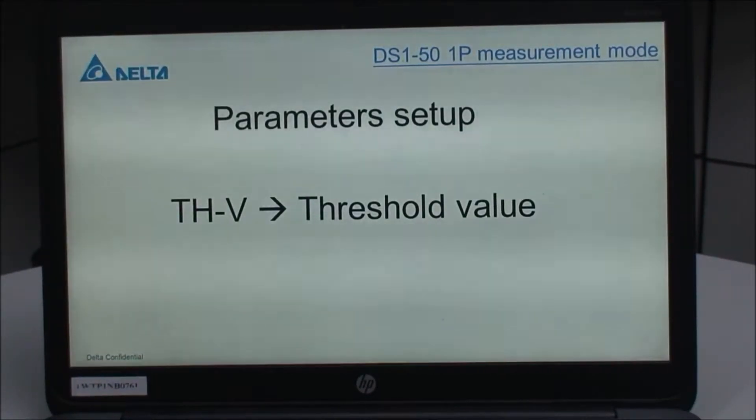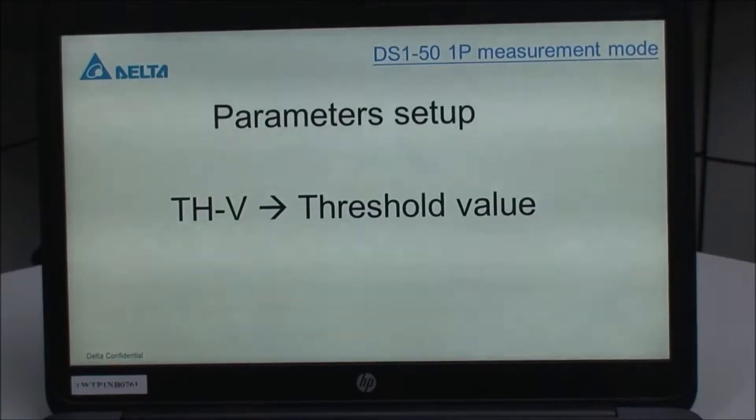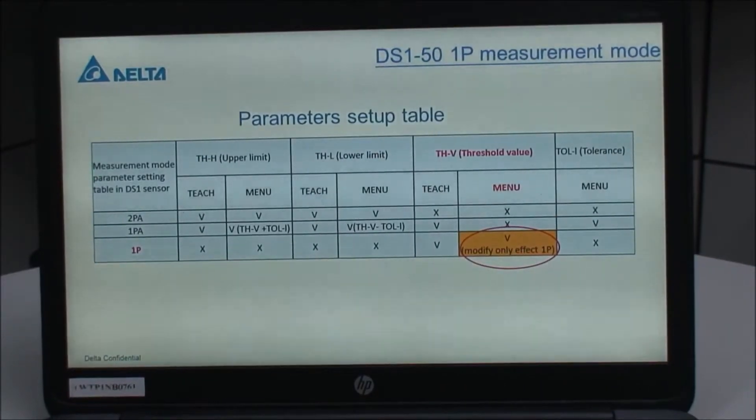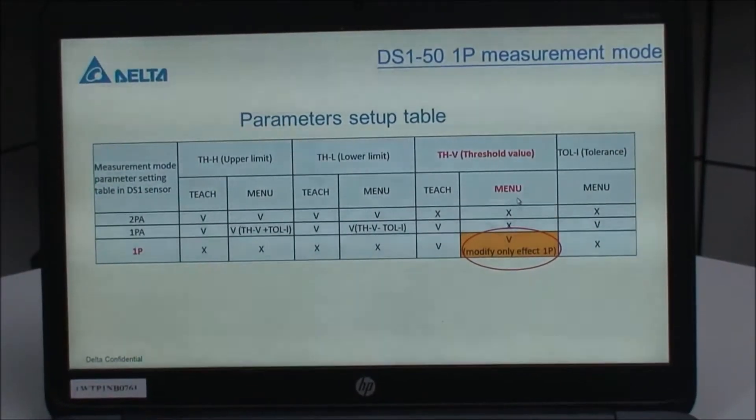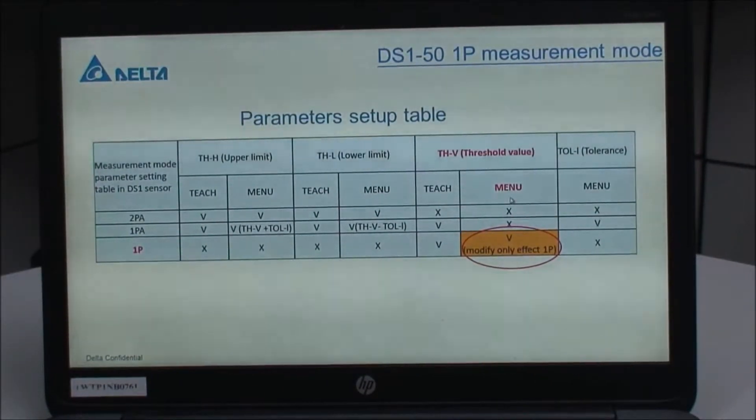In 1P measurement mode, the parameter we only need to set up is the threshold value. We provide two ways to set up the threshold value in 1P measurement mode. The first one is a menu way, the second one is a teach way. I'm going to introduce the menu way first.